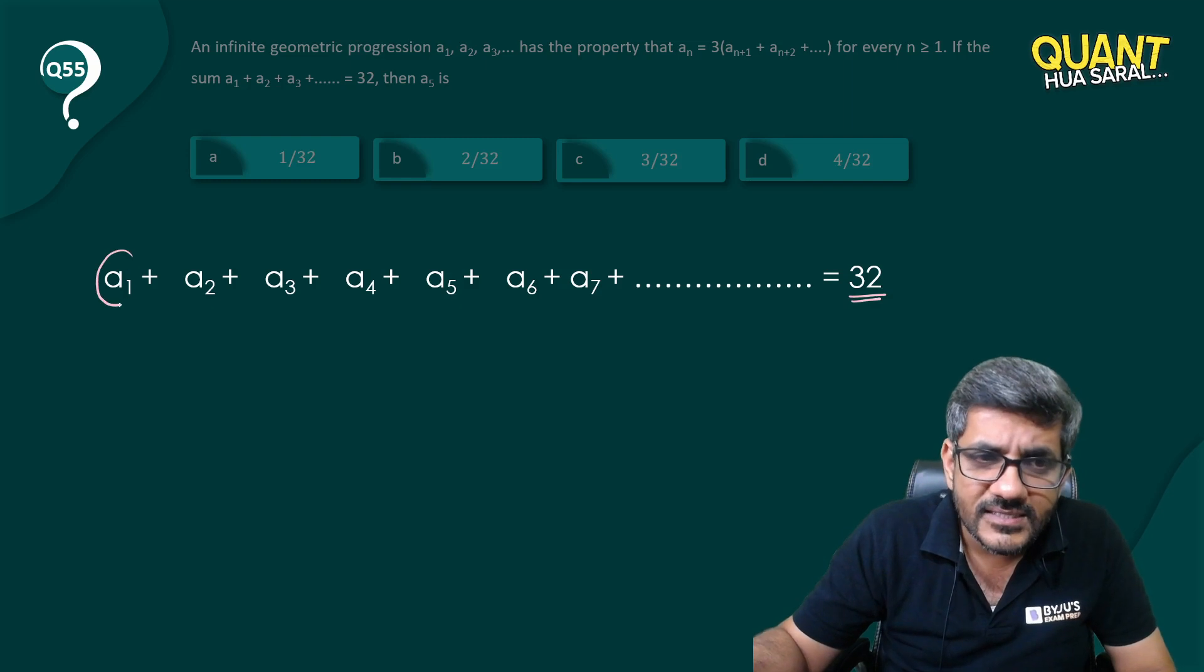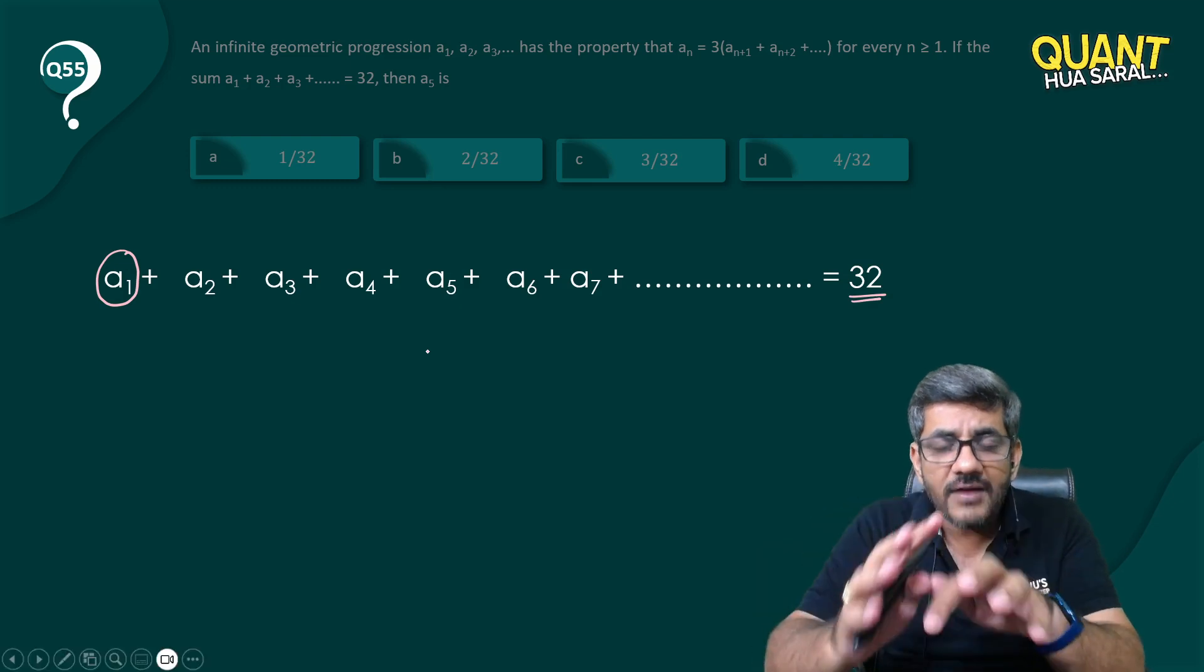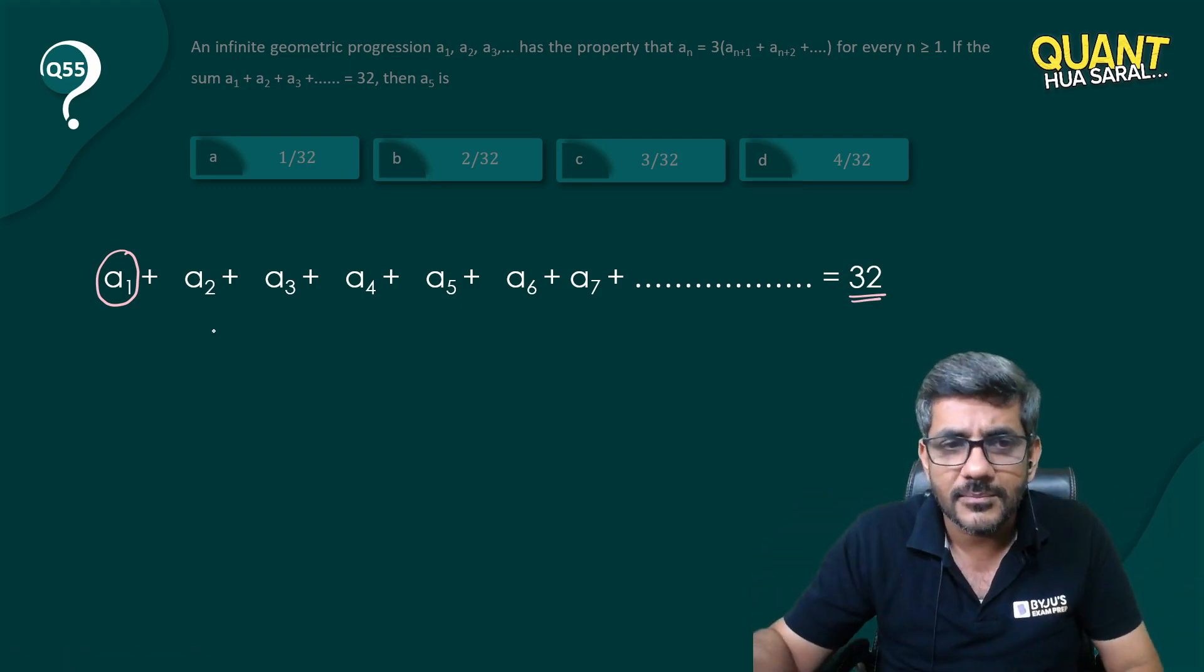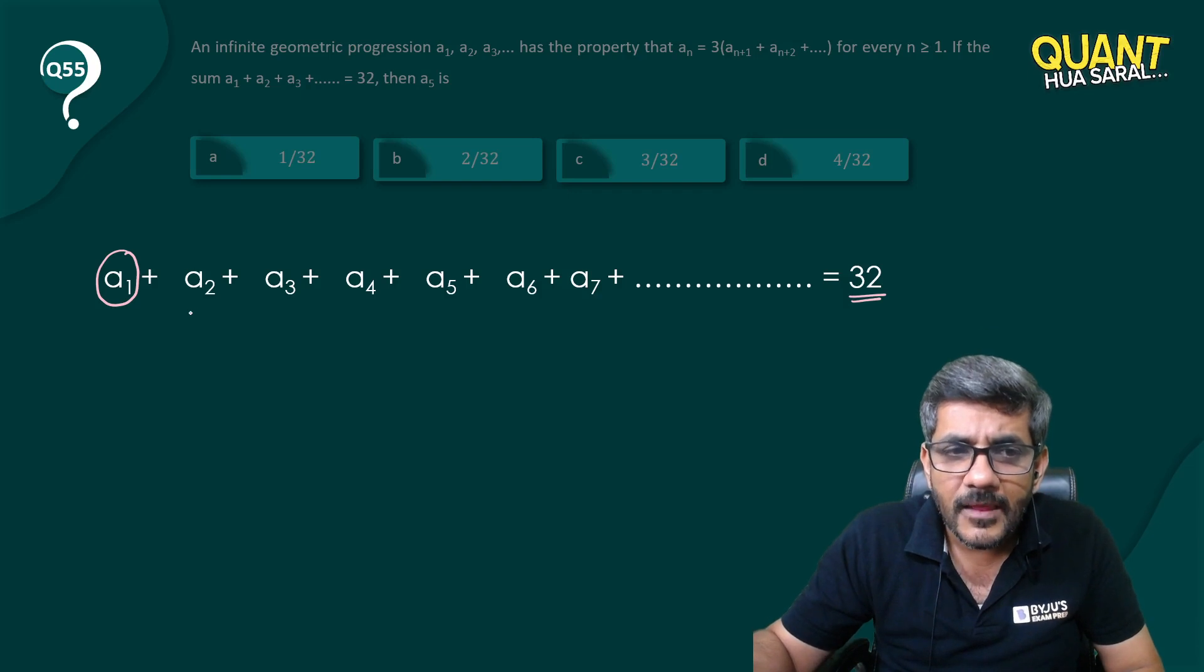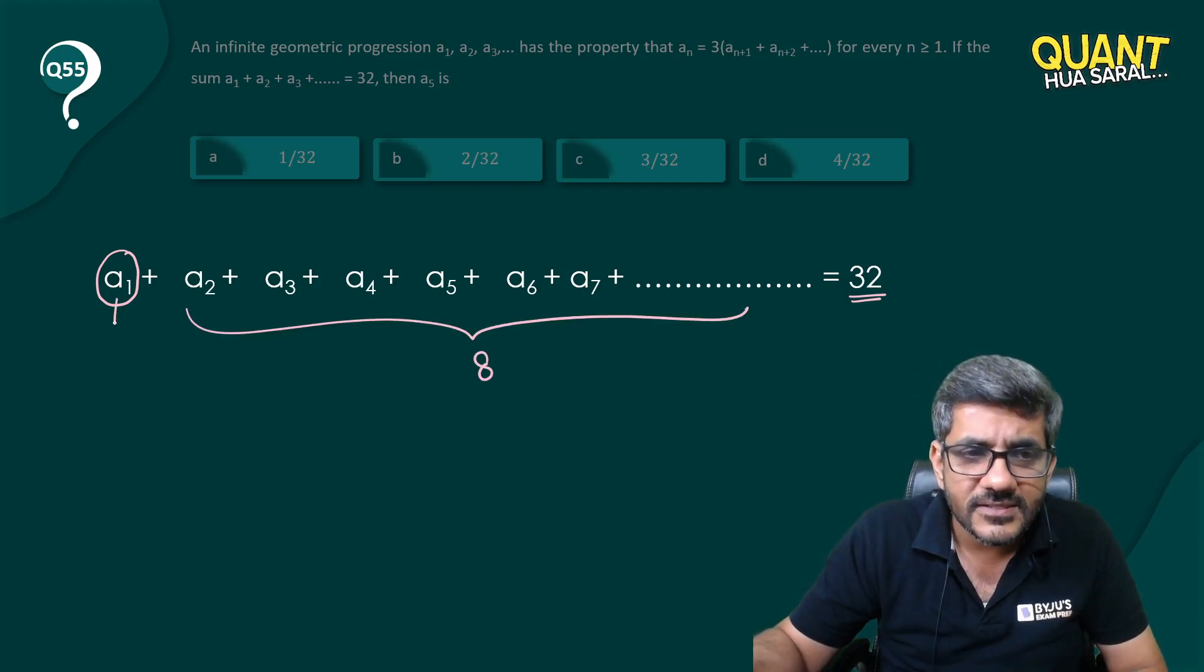And I know that this term is three times the sum of all others. So that means I have to divide 32 into two parts such that one part is thrice of the other part. Can't I straight away say that if the sum of all these terms is 8, then this term is equal to 24? I hope you agree with me on this, because 8 times 3 would be 24.